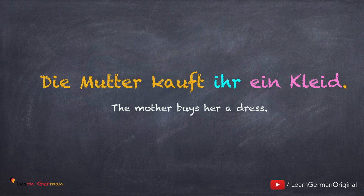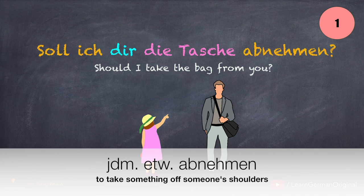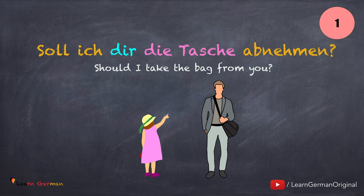Here's the first sentence: Soll ich dir die Tasche abnehmen? The words in blue are the dative object and the words in pink are the accusative object. The verb here is abnehmen. This verb could have many meanings, but here it means to take something off somebody's shoulders. The best way to learn these verbs is along with the pronouns jemandem and etwas: Jemandem etwas abnehmen. Jemandem is the dative object; etwas is the accusative object.